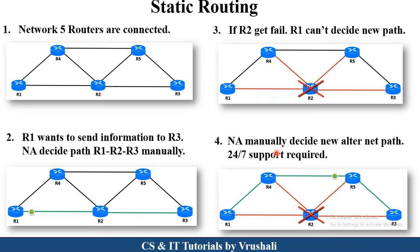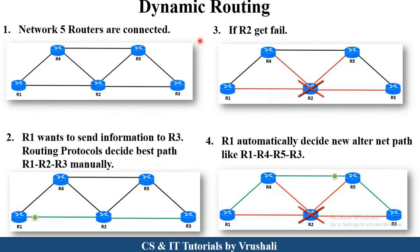On the opposite side there is dynamic routing. In the same example, there are five routers in the network and R1 wants to send information to R3. In dynamic routing, different routing protocols are used. These protocols decide a particular path — suppose R1 to R2 and R2 to R3. Information is sent along this path, but due to some network error R2 fails. At that point the routing protocols automatically decide an alternate best path to reach R3. This is not a time-consuming process.